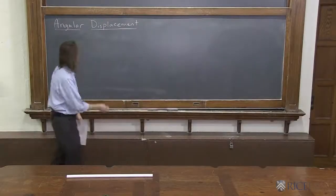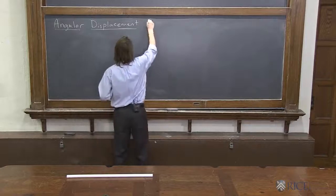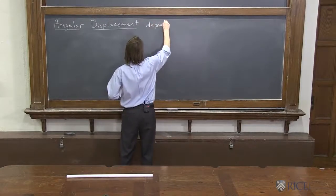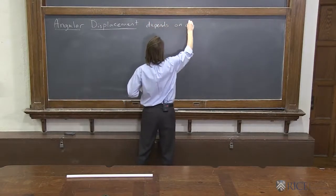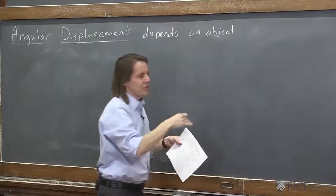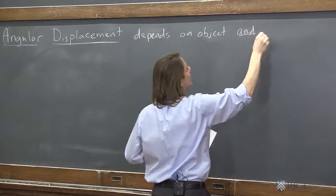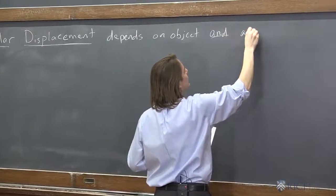Our first quantity in rotational motion is the angular displacement. So we're not going to define it, let's just point something out about it. It depends on the object, both on its shape and which direction it's pointing, but it depends on the object and the axis of rotation.